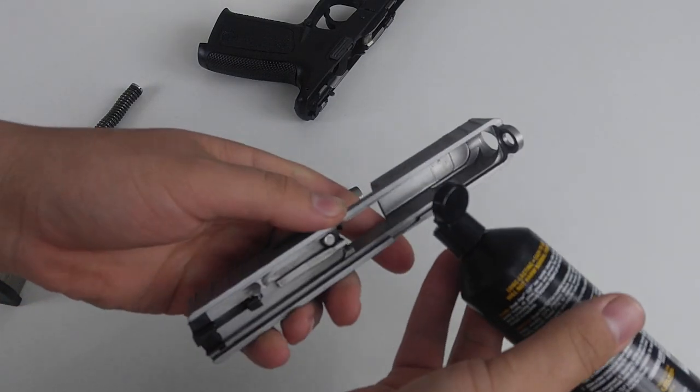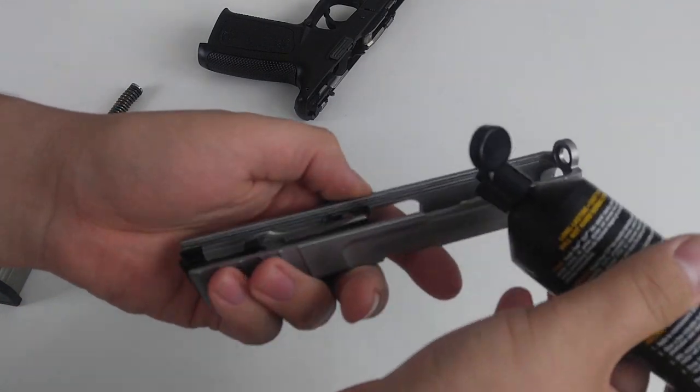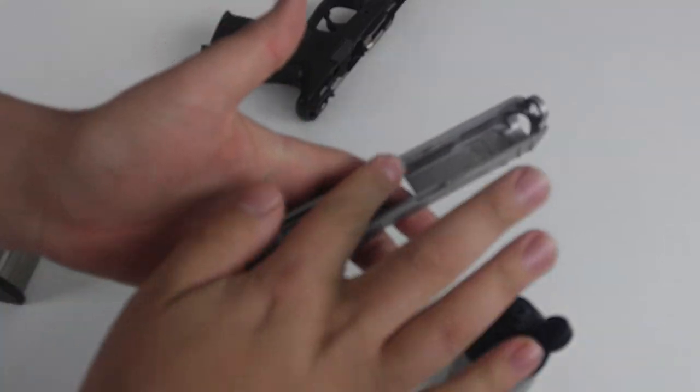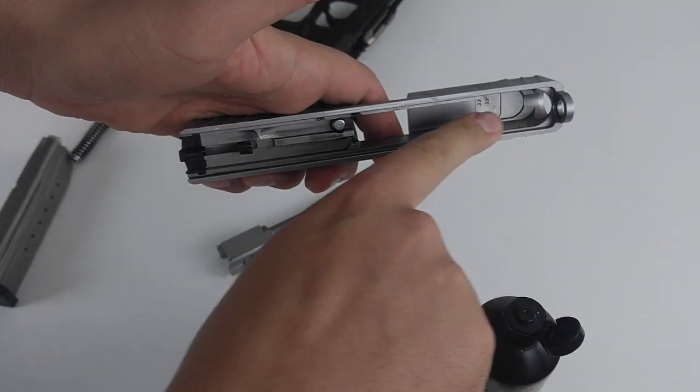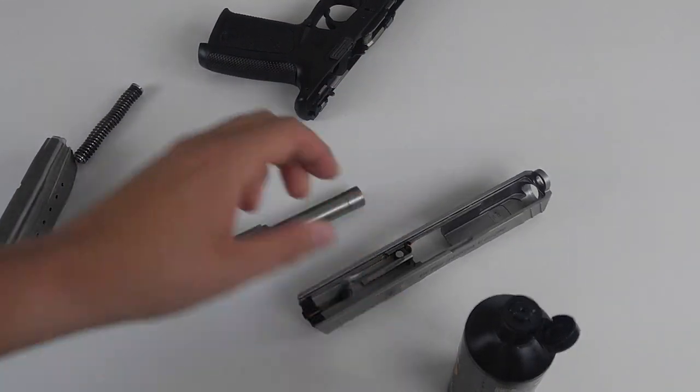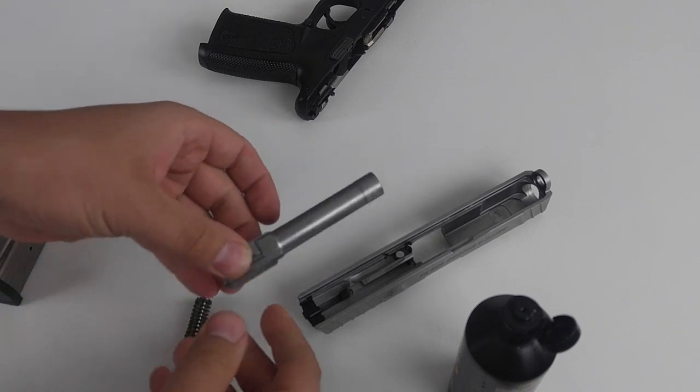And now what else I like to do is put a drop on either side of the slide and then just rub that in like so. Make sure you wipe off the excess, and now we can reassemble the firearm.